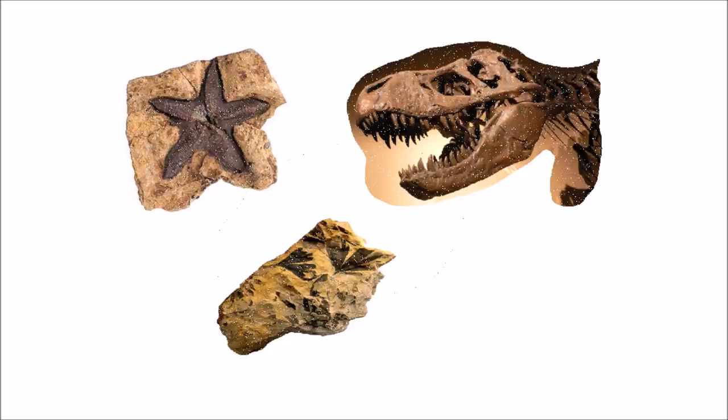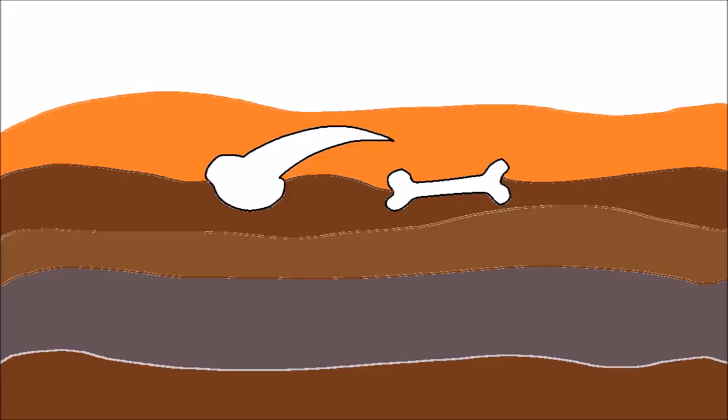Fossils are remains of ancient animals and plants, or traces of their activities in the past. Fossils are made of minerals from rocks — they have the same shape that the original item had, but are chemically more like rock.